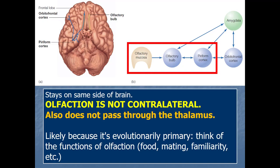The reason smell is different — not contralateral, not going through the thalamus — is likely because it's evolutionarily primary. It came first, before other senses really developed in our distant ancestors, as suggested by paleontological records and studying anatomies across the phylogenetic tree. For basic survival — food, mating, familiarity, navigating the environment — olfaction is pretty primary. The olfactory bulb also has direct connections to limbic system structures like the amygdala, an area important for emotion-related learning.